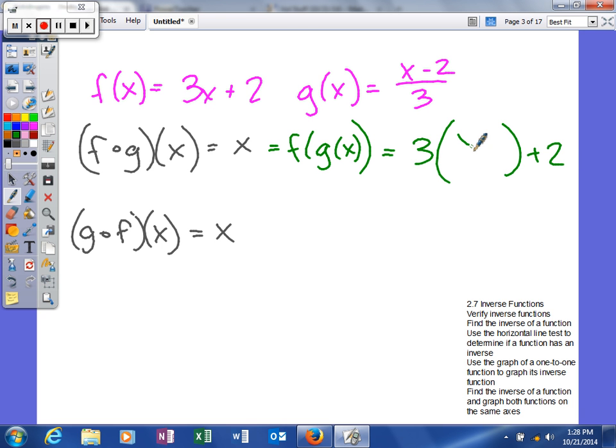We get (x - 2)/3. When you multiply those things together, the threes cancel, leaving us x - 2 + 2. When you combine like terms, you get x. That's only half of what we need to do.